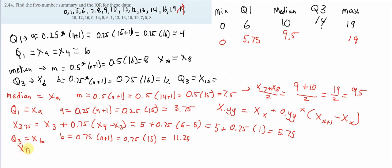So, our q3 is x11.25, which is the same as x11, plus the trailing part here, 0.25 times x12 minus x11. So, 1, 2, 3, 4, 5, 6, 7, 8, 9, 10, 11, 12. So, it's equal to x11 is 13 plus 0.25 times the distance, and x12 is 14 minus 13, which is equal to 13 plus 0.25 times 1. 14 minus 13 is 1. So, we have 13.25.